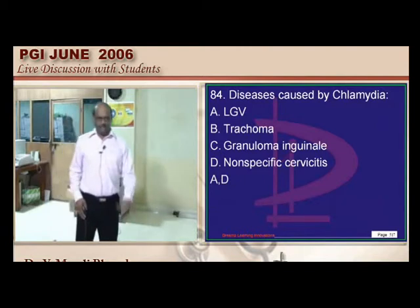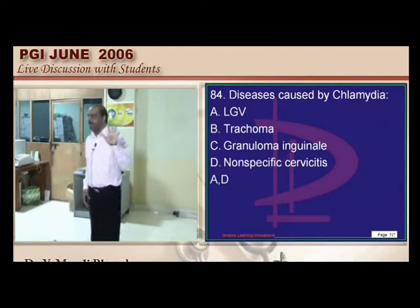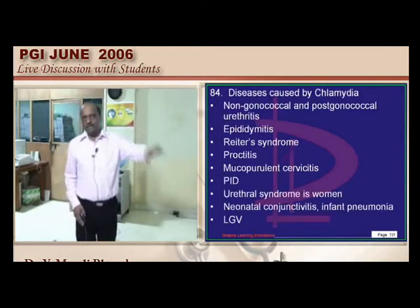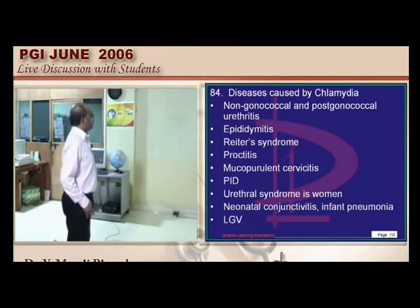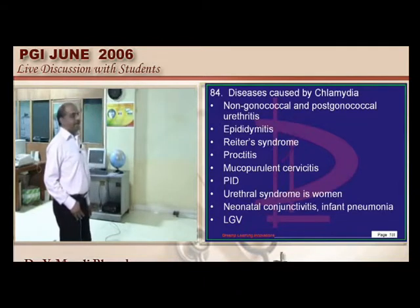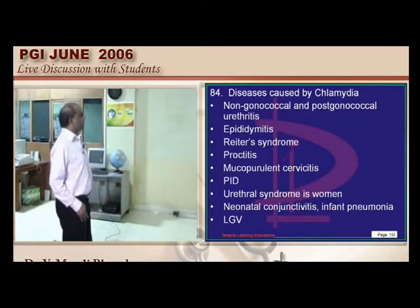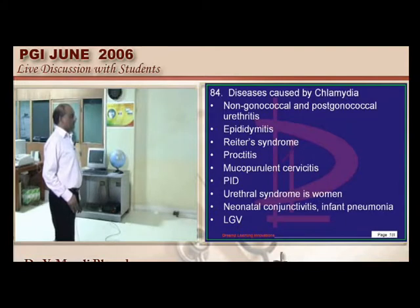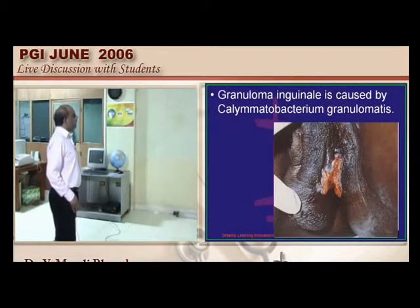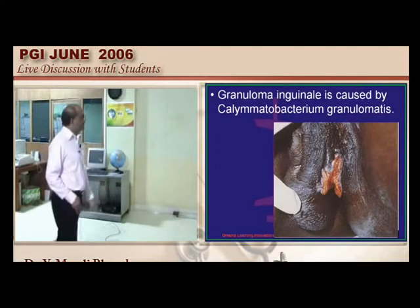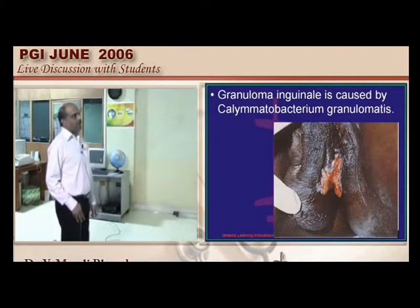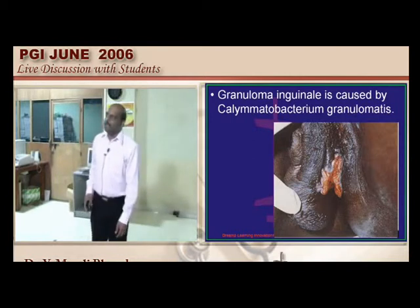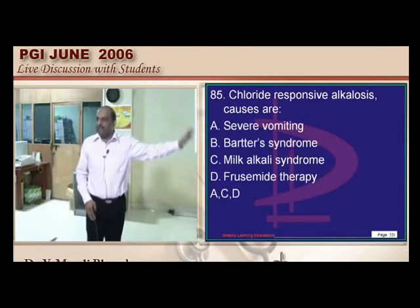Chlamydia causes non-gonococcal urethritis, epididymitis, Reiter's syndrome, proctitis, LGV, and neonatal conjunctivitis. Granuloma inguinale — with beefy red lesions — is caused by Klebsiella granulomatis (Calymmatobacterium granulomatis), not Chlamydia.